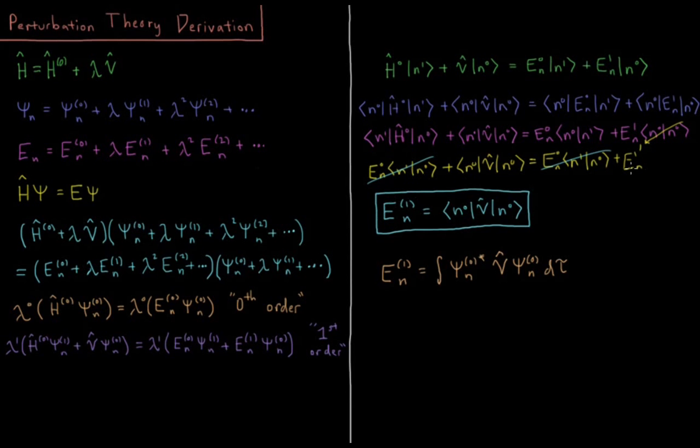What we're left with is the first order energy of our nth eigenfunction is equal to the integral overall space of psi 0n star times the perturbation operator acting on psi 0n. So this video derived our expression for the energy in first order perturbation theory, which uses our perturbation operator and our reference wave function. The first order correction to our energy is the expectation value of the perturbation operator acting on our reference wave function.